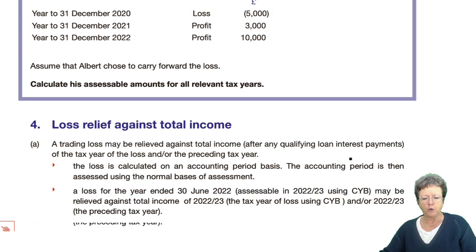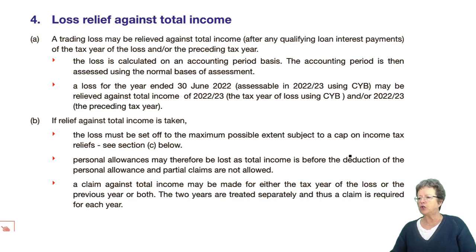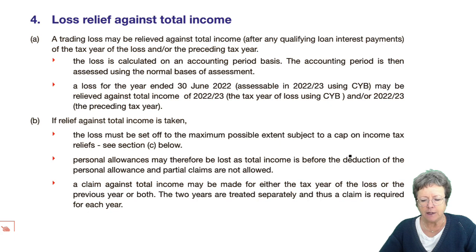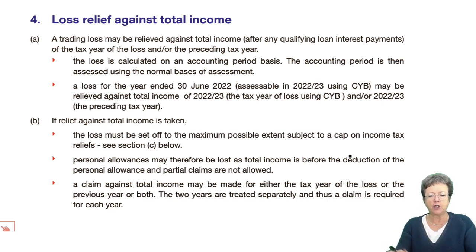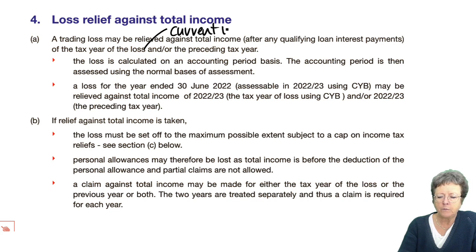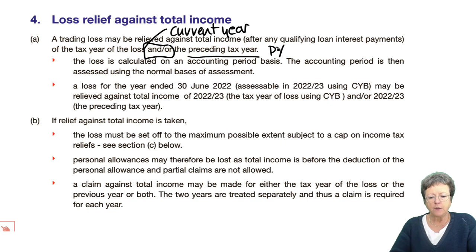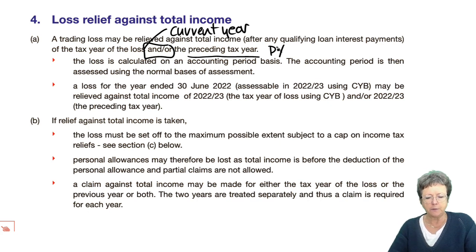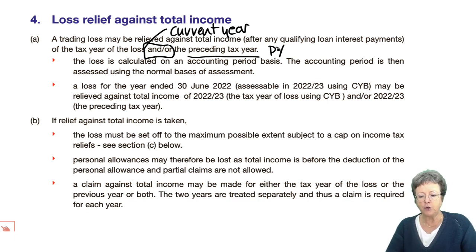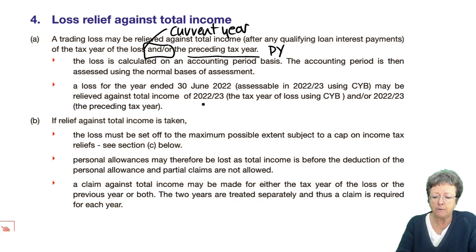Loss relief against total income: a trading loss may be relieved against total income, after any qualifying loan interest payments, in the year of loss — which is the current year — and/or the preceding tax year, the previous year. So the loss is calculated on an accounting period basis and then assessed using the normal basis of assessment. A loss for the year to 30th June 2022, which would be assessable in 2022-23 on a current year basis, may be relieved against income in that year or the year before, if you've got other income in that year.